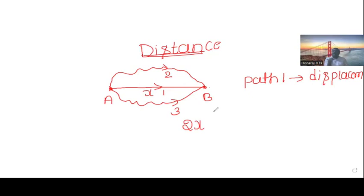Distance is a scalar quantity, just a magnitude. Displacement is a vector quantity. Vector quantity is nothing but has magnitude as well as direction. That's about distance and displacement.